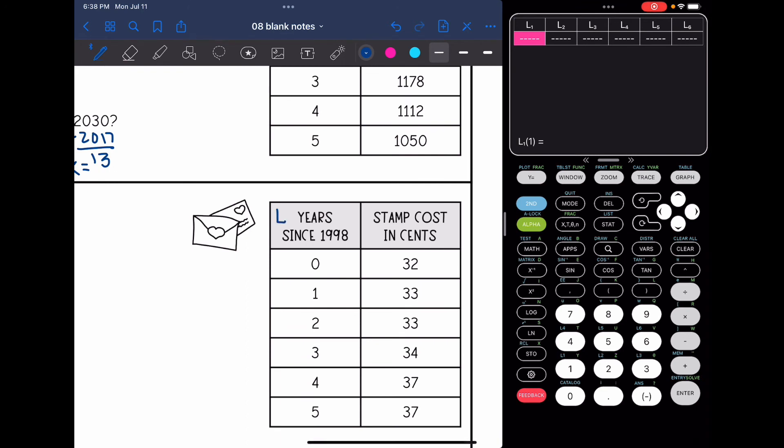Okay, and the years since 1998 will go in L1 and the stamp cost will go in L2. So 0, 1, 2, 3, 4, 5. And then the cost was 32 cents, 33 cents, 33 cents, 34 cents, 37, and 37.